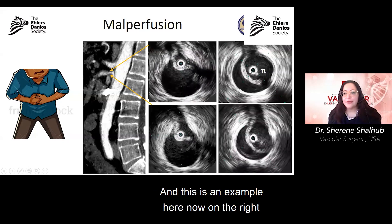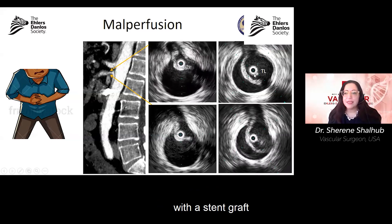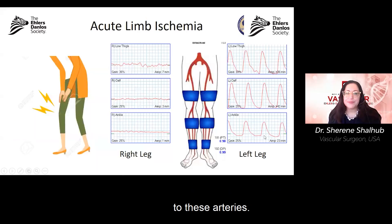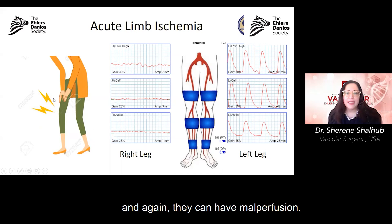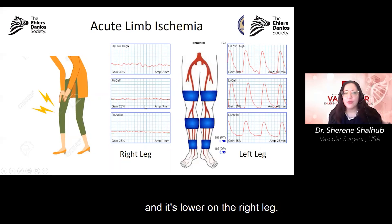On the right is an example of what the imaging looked like after we treated this person with a stent graft and opened the true lumen to restore better perfusion to these arteries. Malperfusion can also present with acute limb ischemia — when blood flow to an extremity has been interfered with. You can see the pulse waveforms showing lower flow on the right leg.